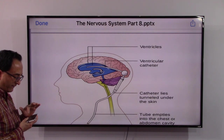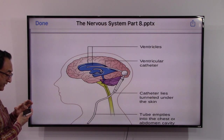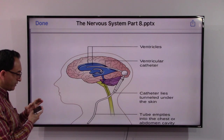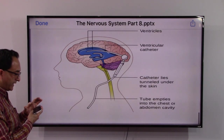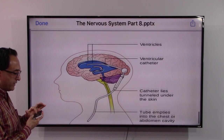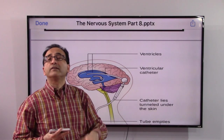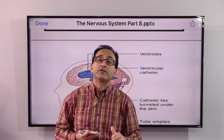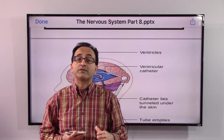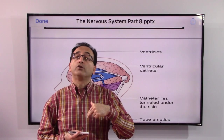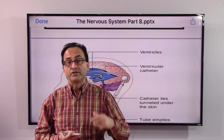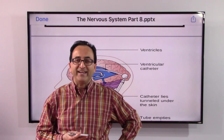As mentioned earlier, a catheter is used to drain the fluid, and that is what is shown here. There are many other diseases and disorders relating to the brain, central nervous system, and peripheral nervous system. We took an overview of those diseases and will get into each one by one. See you soon — take care, bye bye.